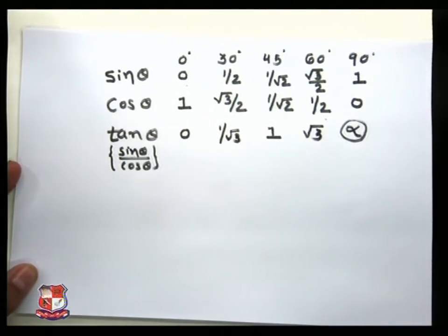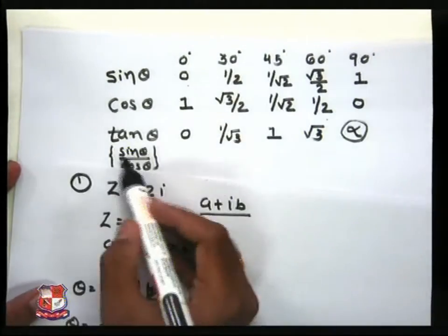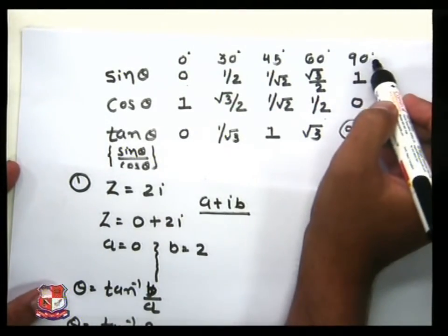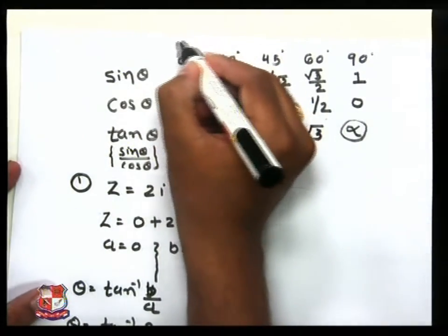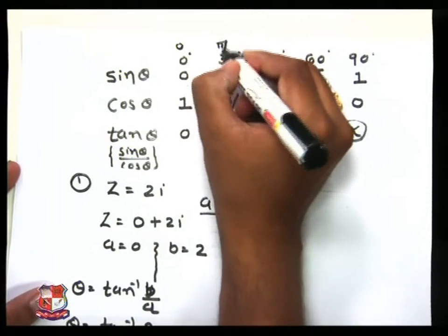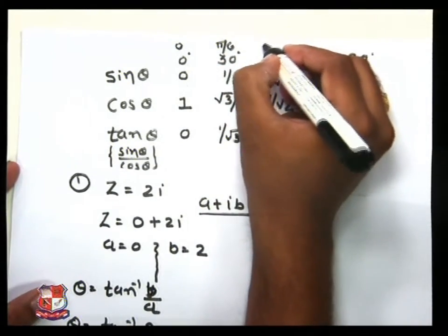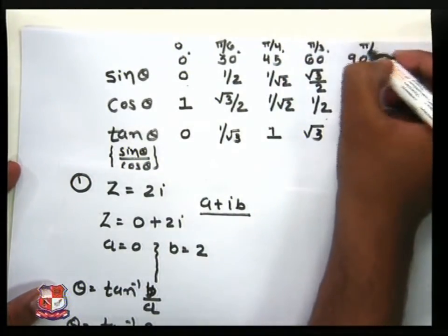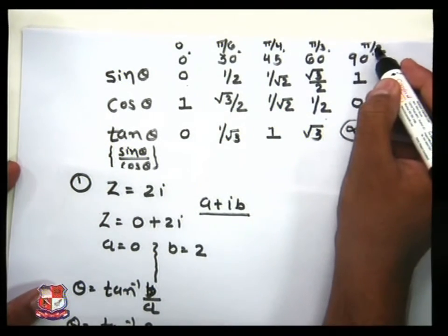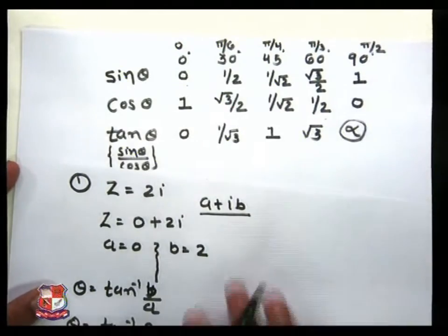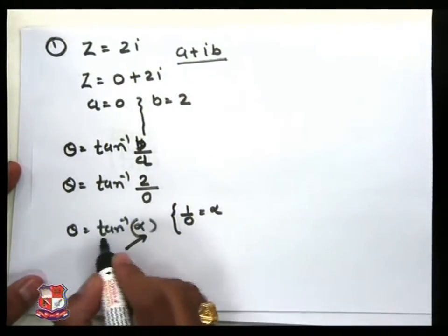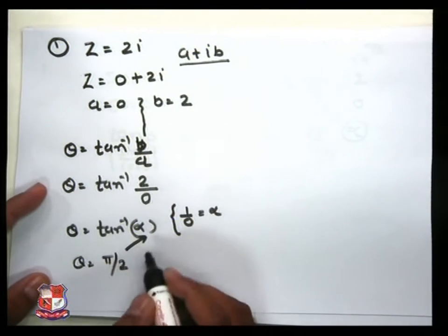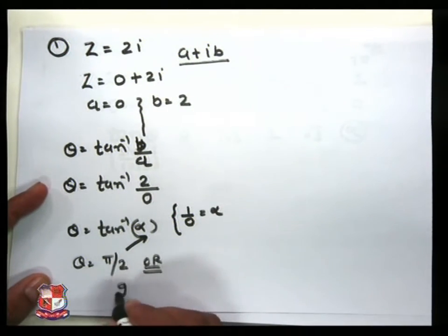In our previous example, we asked at which angle does tan go to infinite — the answer is 90° or π/2. So θ = π/2.